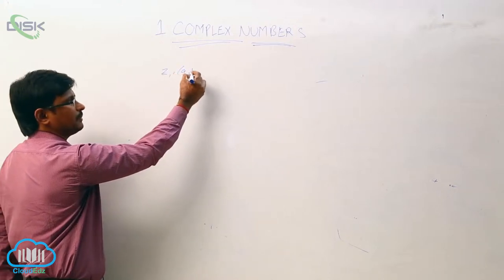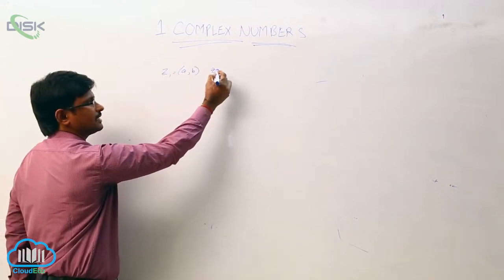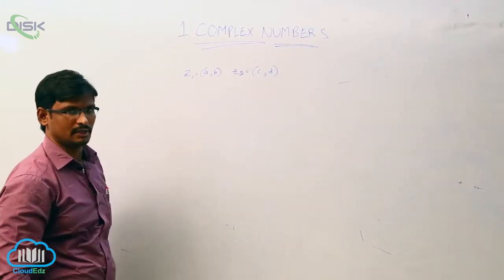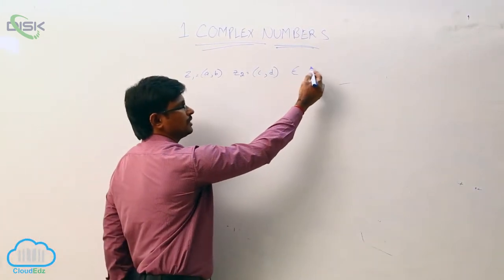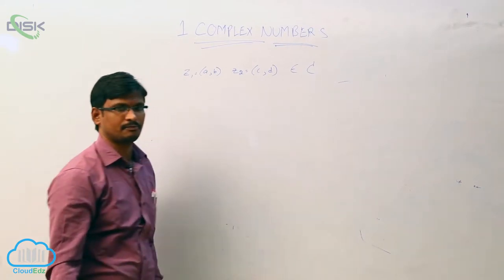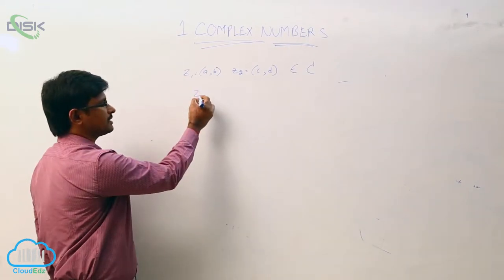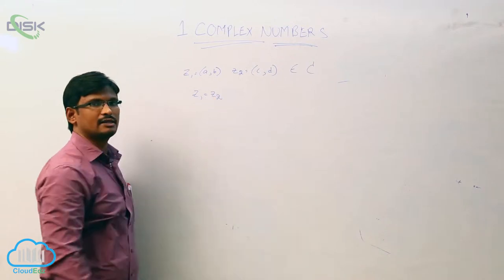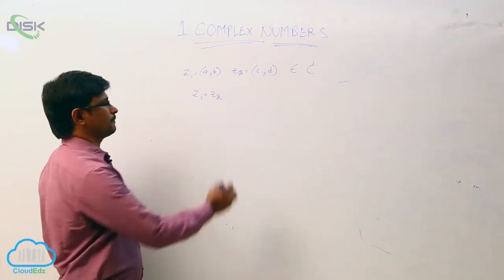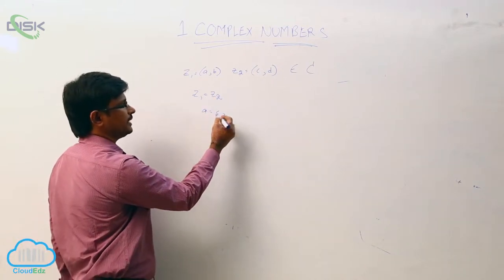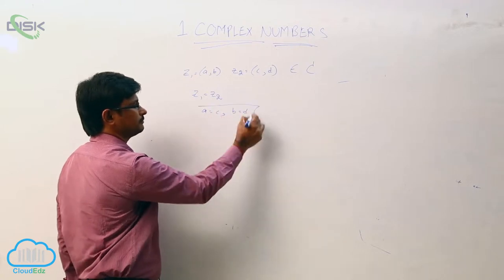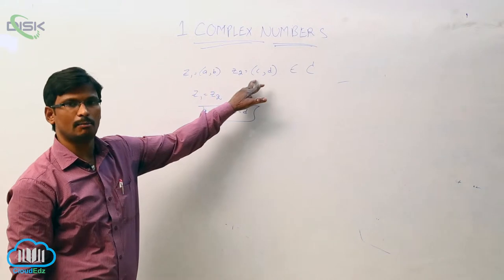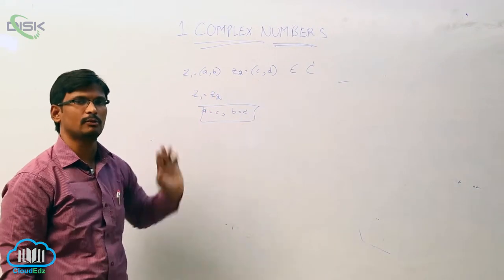Let z1 = (a, b) and z2 = (c, d) be any two complex numbers. These belong to the complex numbers. The two complex numbers z1 and z2 are said to be equal if a equals c and b equals d — that is, the corresponding elements in the complex numbers should be equal.